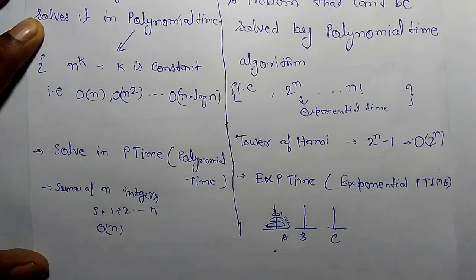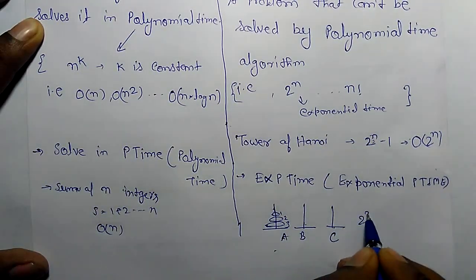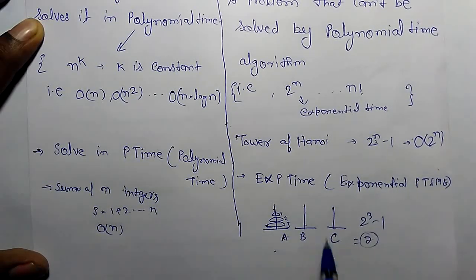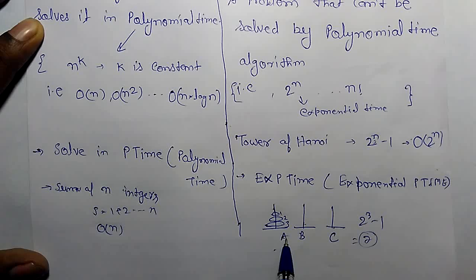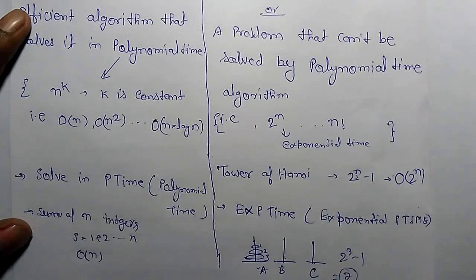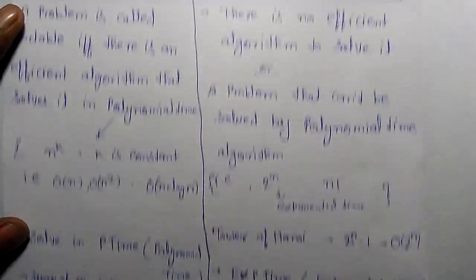Total number of steps, where n is number of disks here, would be 2 to the power n minus 1. For n equals 3, that's 7. So in 7 steps we can easily transform A to C in this order. So the Tower of Hanoi problem will be solved in non-polynomial time or exponential time. So it is an intractable problem.